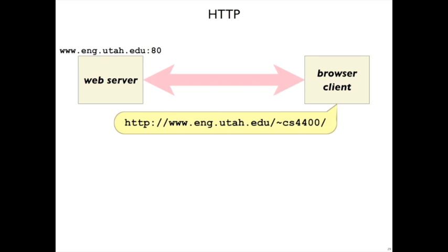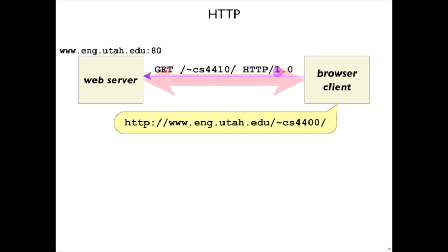The browser will make a TCP connection to the web server, and then it'll send text like this. We'll get into this protocol in a little bit, but it'll say GET followed by the path slash cs4400, then HTTP 1.0. The web server will read this and send back the webpage content of that page.